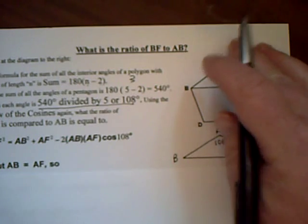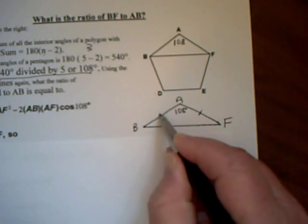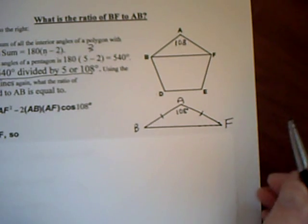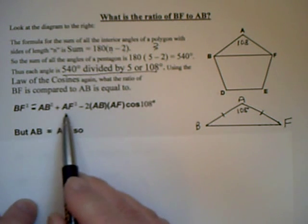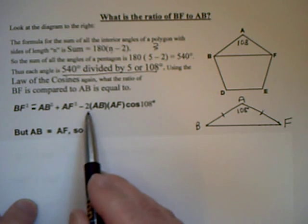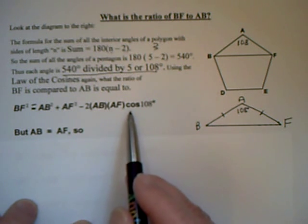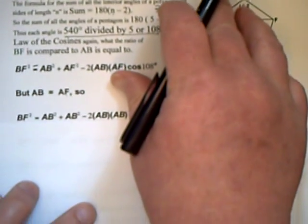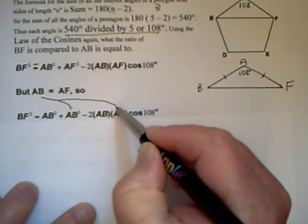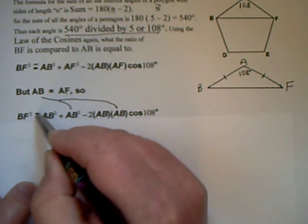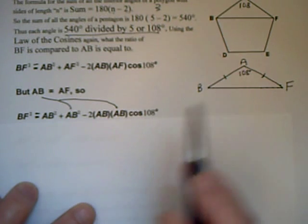So I can now use the law of the cosines. Just zeroing in on this triangle, I have AF and AB are the same side, and the law of the cosines says that BF squared equals AB squared plus AF squared, minus 2 times AB and AF, the same two sides, times the cosines of 108. But since AB and AF are equal, I can substitute that in. So instead of AF, I'm going to write AB into those two spots, and I'll make this equal sign look a bit better. So BF squared now equals those two things, minus 2 times the same things, cos 108.